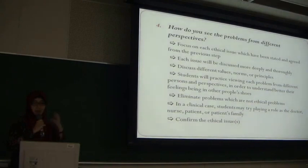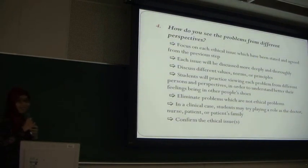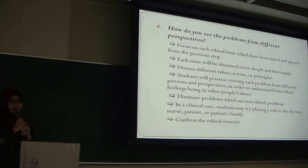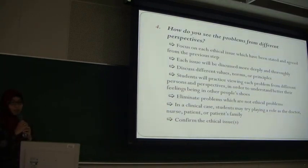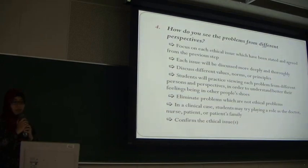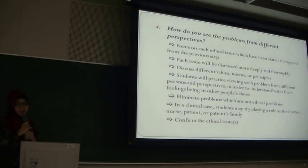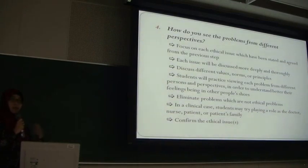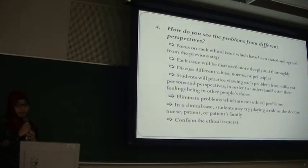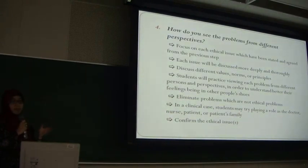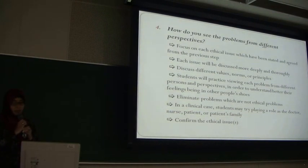The fourth step is the most important one, or the most time-consuming one — how do you see the problems from different perspectives? Students will focus on each ethical issue which has been agreed upon in the previous step, and it will be discussed more deeply and thoroughly. They will discuss different values, norms, or principles related to that case, and they will practice viewing each problem from different perspectives. They might do some role play. In this step it's possible that they will eliminate certain problems that they realize are not actually ethical problems, so they usually come up with fewer ethical problems.